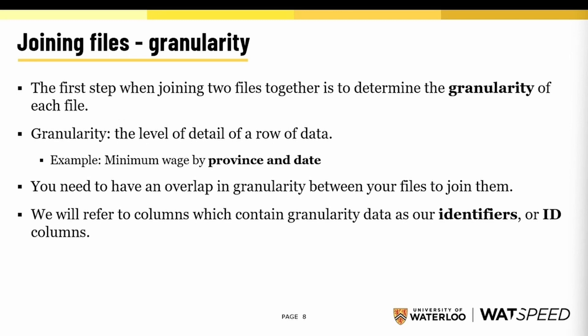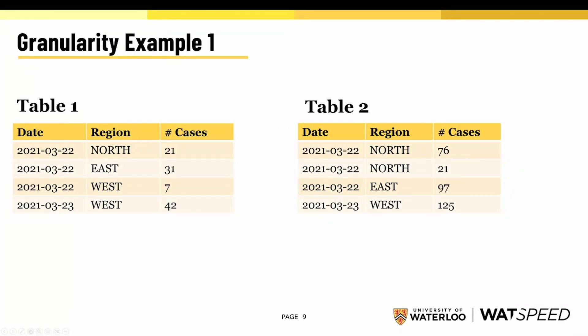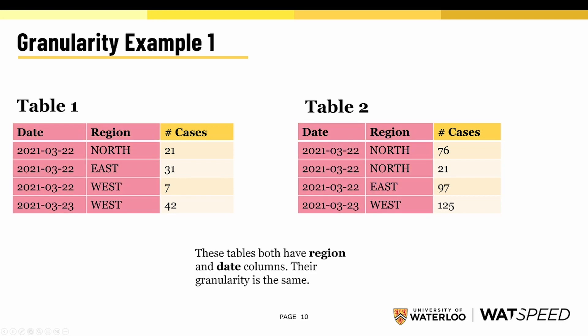Let's take a quick aside and look at some examples of granularity. Say we have two tables, table 1 and table 2. Do these two tables have the same granularity? Yes, they do. These tables both have region and date columns. Assuming that the region column definition is common between the two tables — i.e., the north region in table 1 represents the same north region in table 2 — we have equal granularity. No transformation is needed to join these two files together.